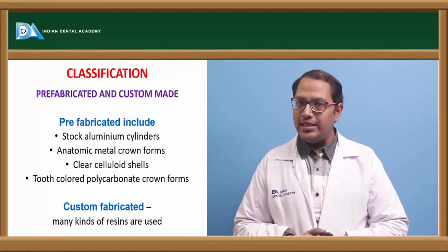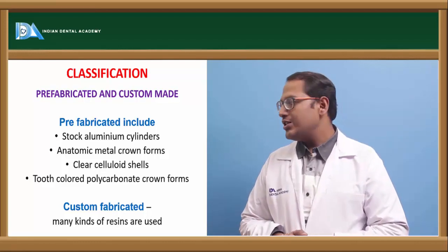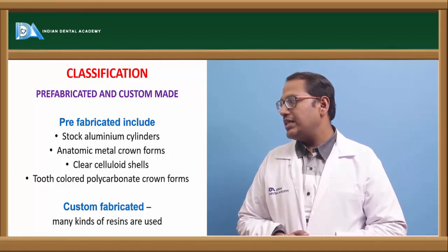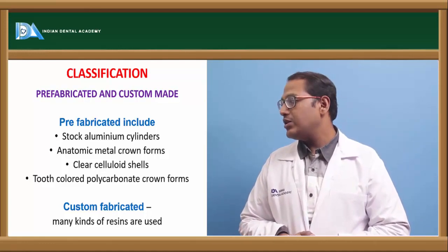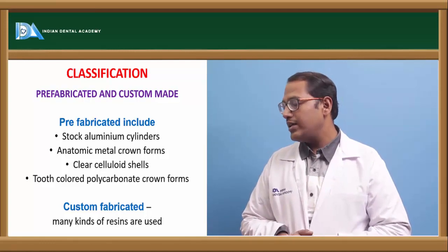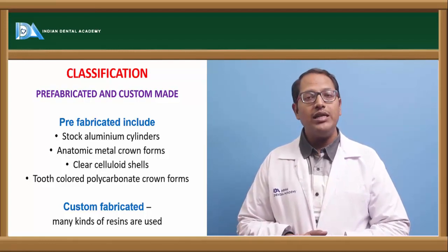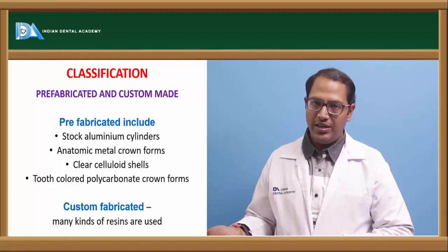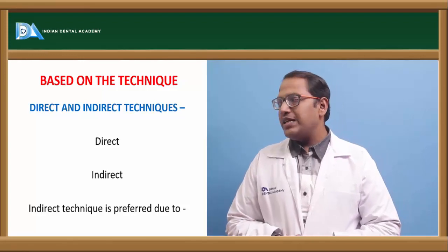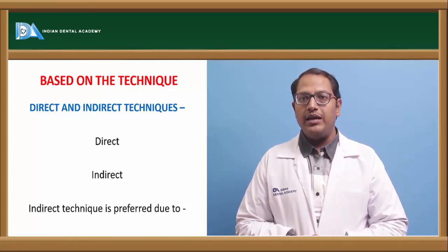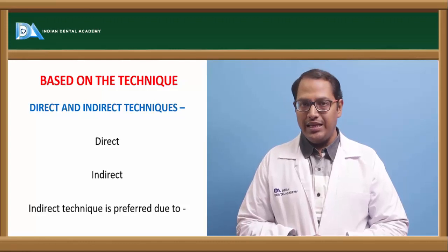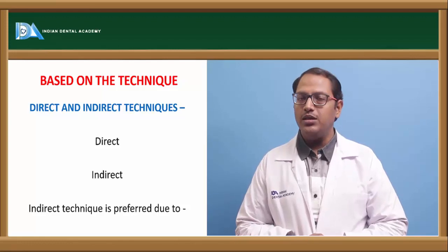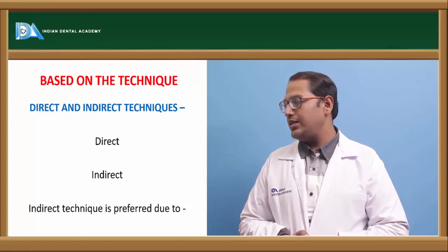We will also understand the shade for the final prosthesis that we have to give. Classification: provisional restorations can be prefabricated or custom made. Prefabricated examples include stock aluminum cylinders like anatomic metal crown forms, clear celluloid cells, and polycarbonate crowns — very beautiful polycarbonate crowns are also available in the market. For custom fabricated, we will see how they are made. Based on technique, custom made can be direct — meaning directly intraorally in the mouth — or indirect, meaning extraorally, outside the mouth.